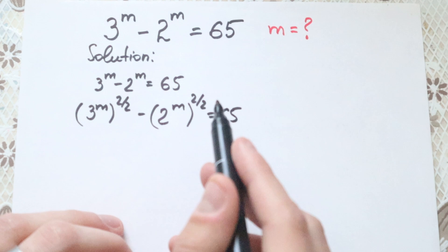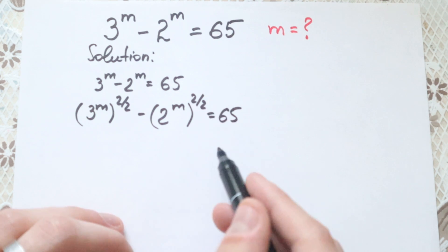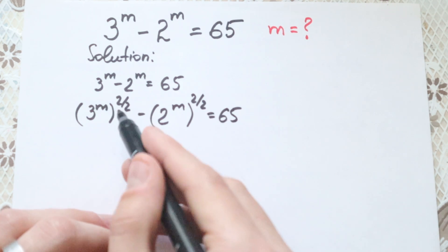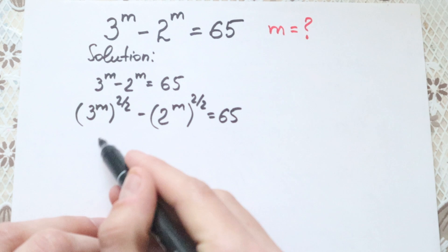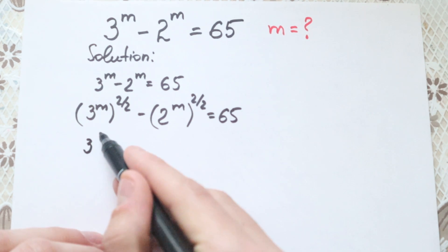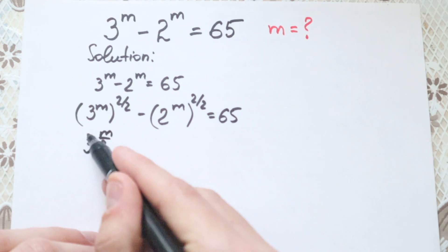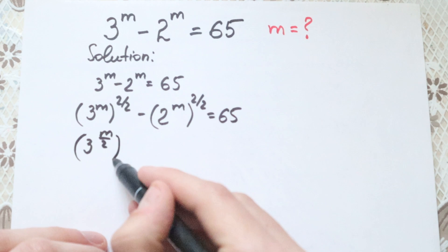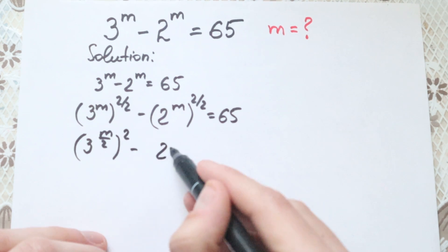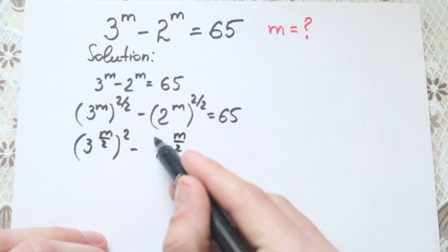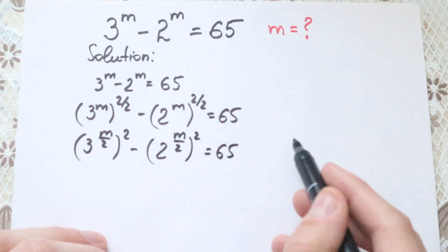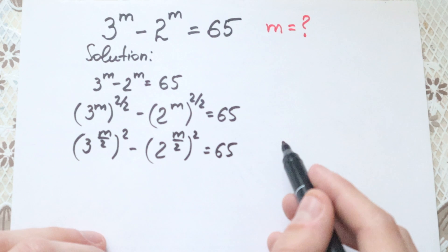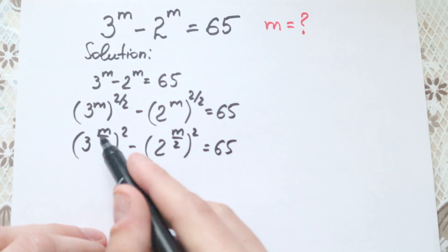If you know a little bit about rules of exponents, we can easily bring the one-half inside the parentheses. So we can write it as 3 to the power m over 2, raised to the second power, minus 2 to the power m over 2, raised to the second power, equal to 65. We just rewrite this as m over 2.